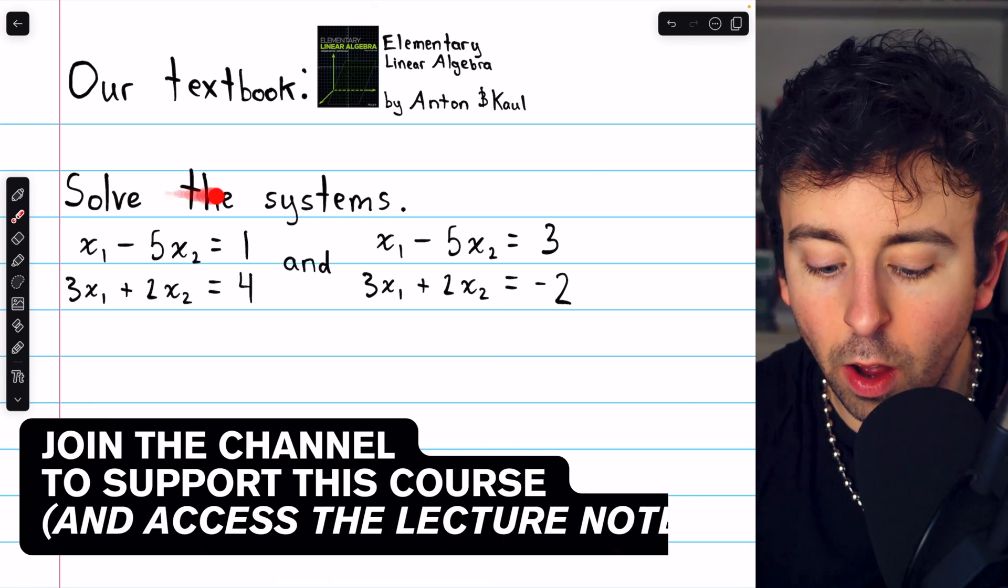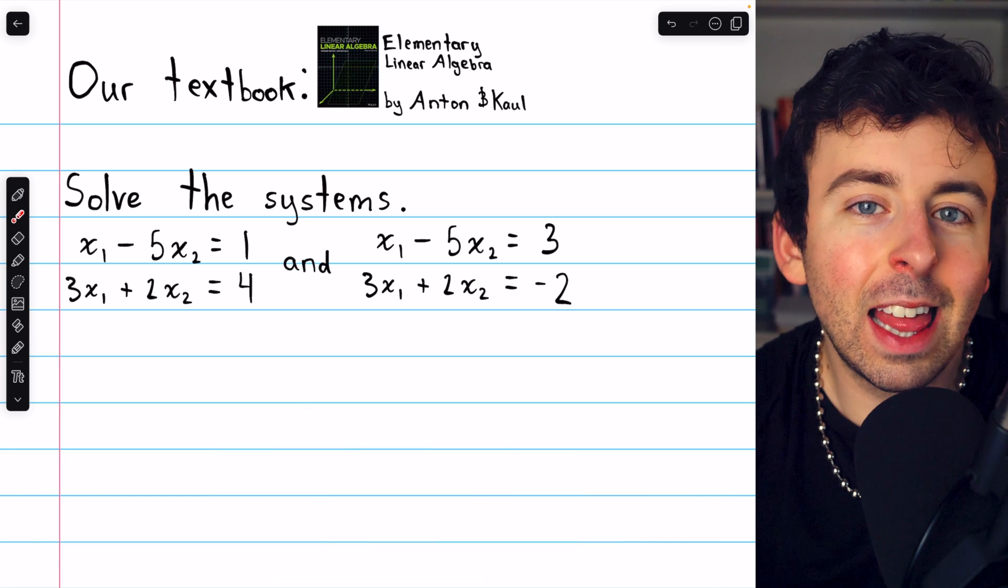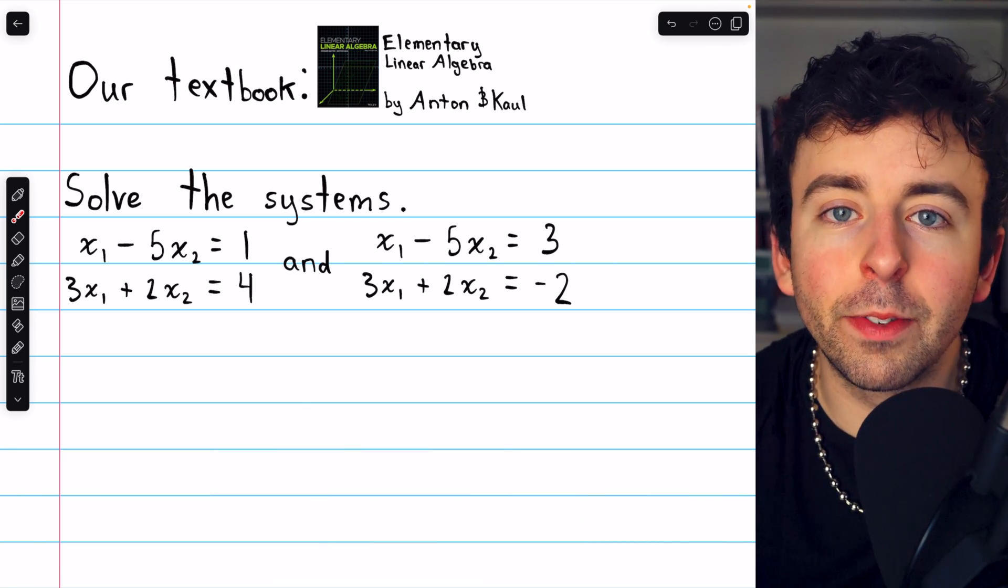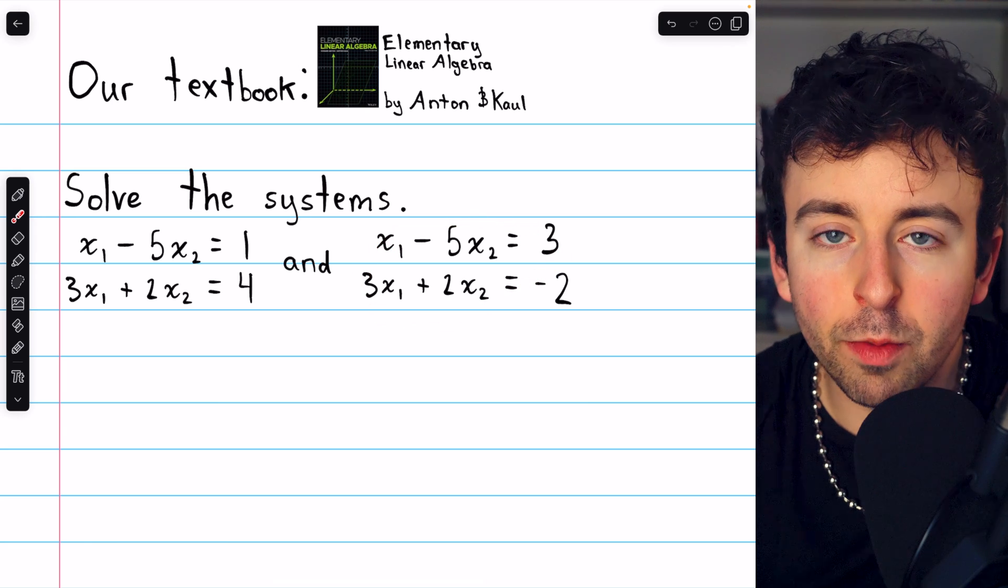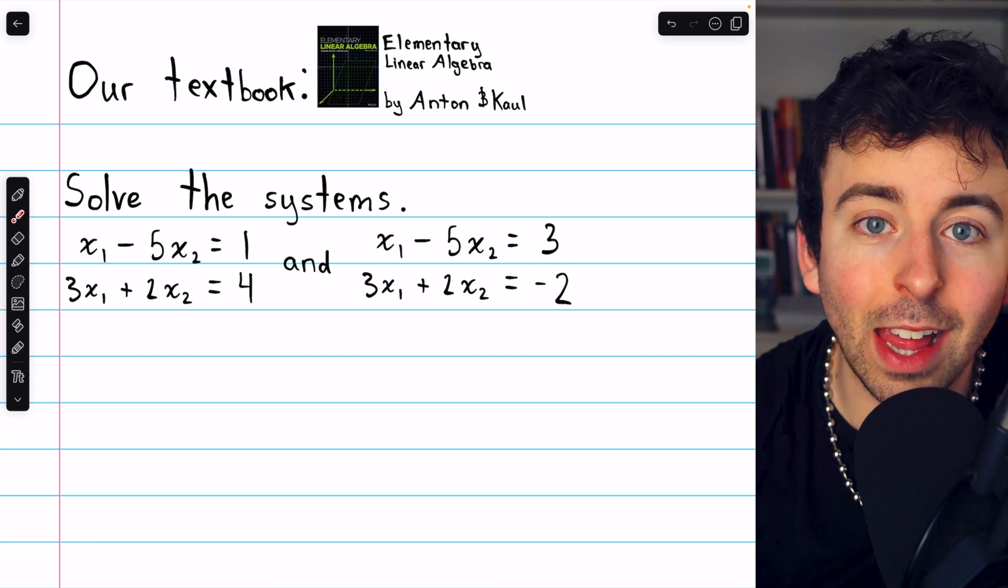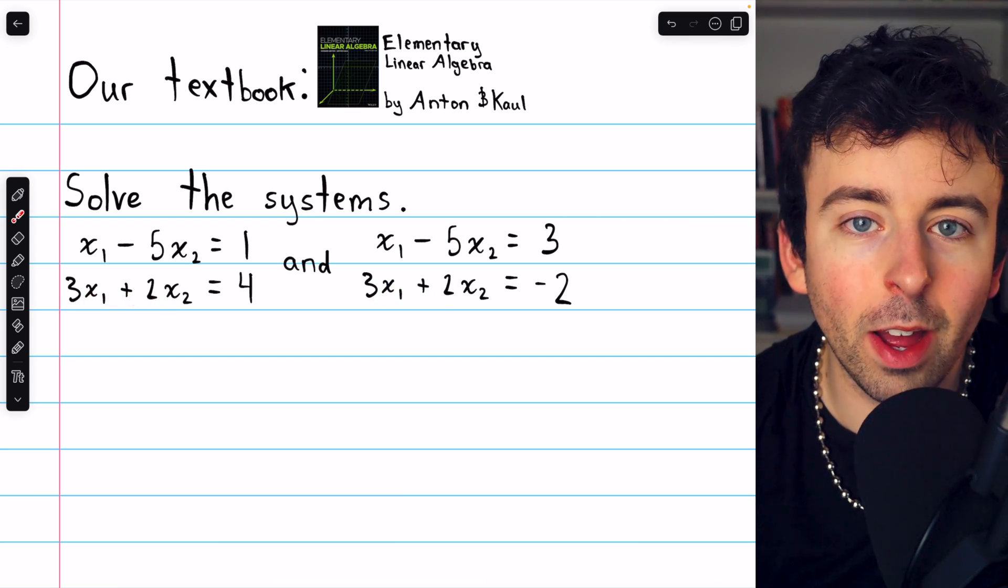Suppose we were asked to solve these two systems of linear equations. That wouldn't be too tremendously difficult, but you might notice that these two systems have the exact same setup on the left: x1 minus 5x2, x1 minus 5x2, and so on.